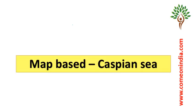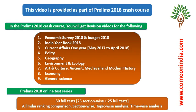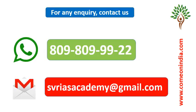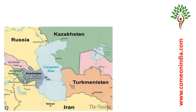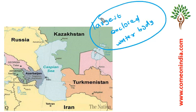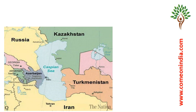In this Geography Revision video lecture, let's first discuss the Caspian Sea. The Caspian Sea is the largest enclosed inland water body, meaning it is completely surrounded by land. So it is the largest enclosed water body on Earth. The Caspian Sea is also classified as the world's largest lake.